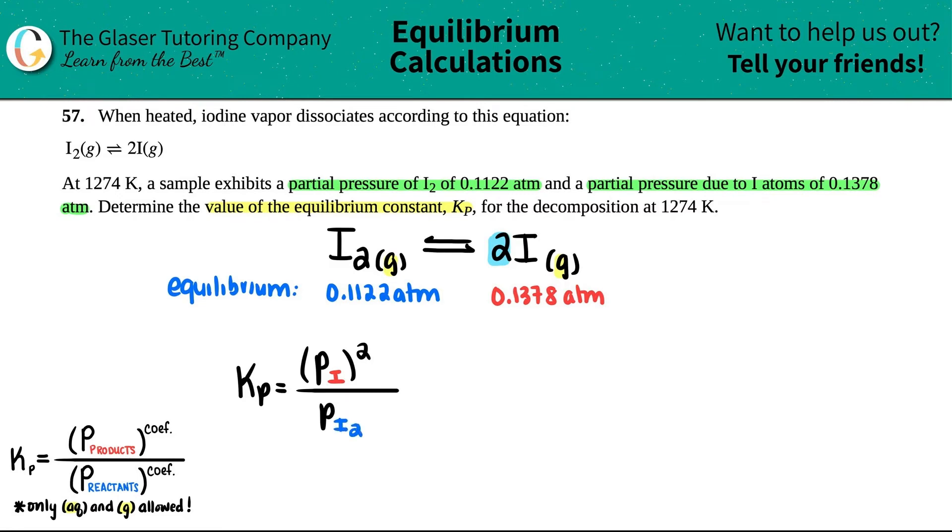There was no coefficient in the front for I₂, that means I have one. So technically I would raise this to the first, but anything raised to the first is itself. Now let's plug in those numbers.